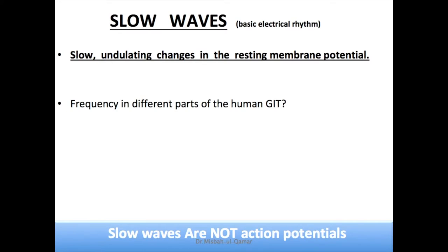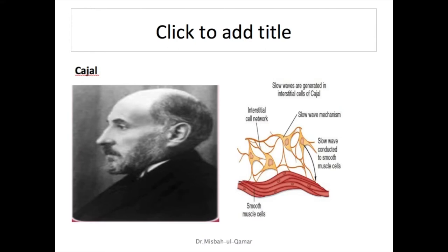Slow waves form the basic electrical rhythm. They are actually slow undulating changes in the resting membrane potential, and the rhythm of gastrointestinal contractions is determined by the frequency of these slow waves. This frequency differs in different parts of the human GI tract — for example, 3 per minute in the body of the stomach, 12 per minute in the duodenum, and around 8 to 9 per minute in the terminal ileum. Keep in mind that slow waves are not action potentials.